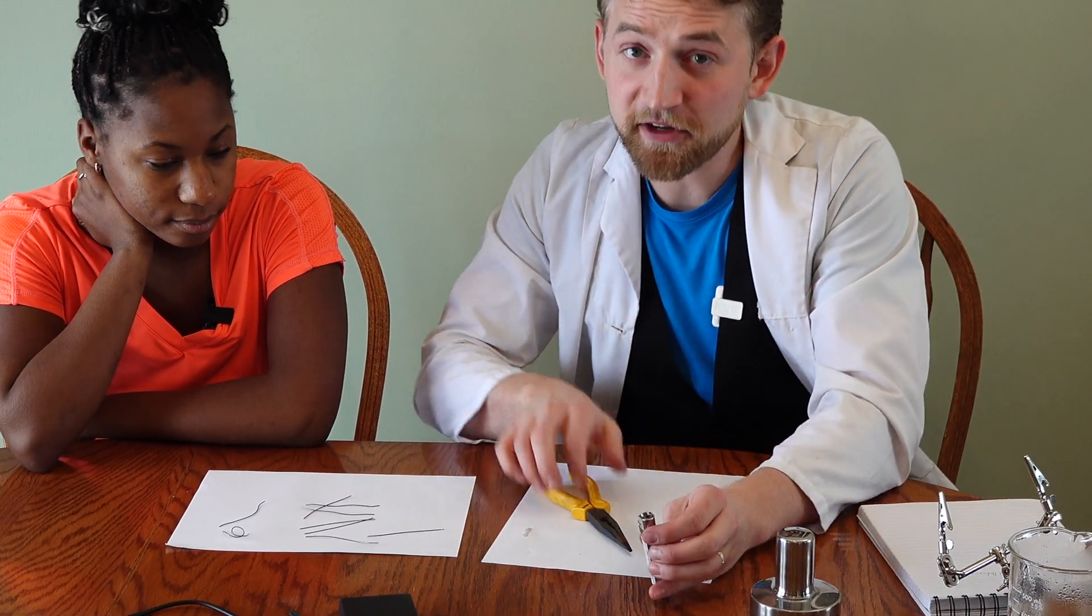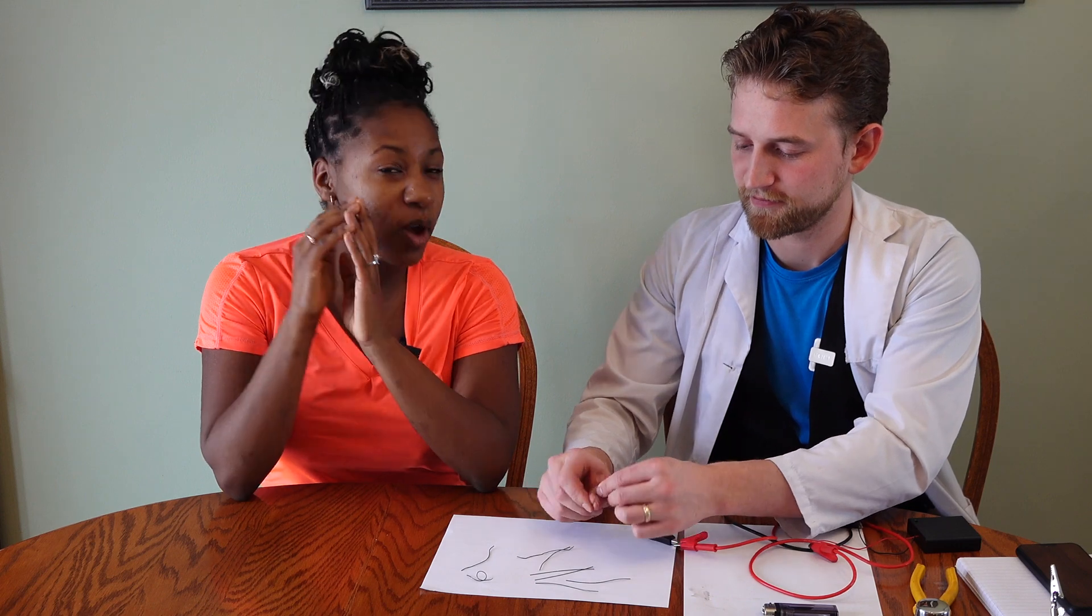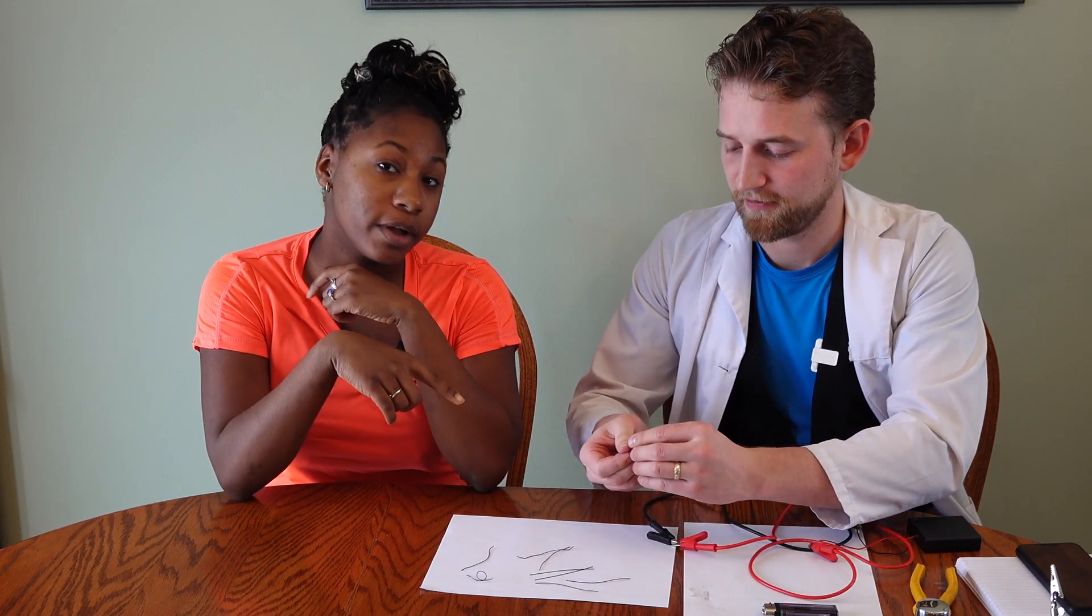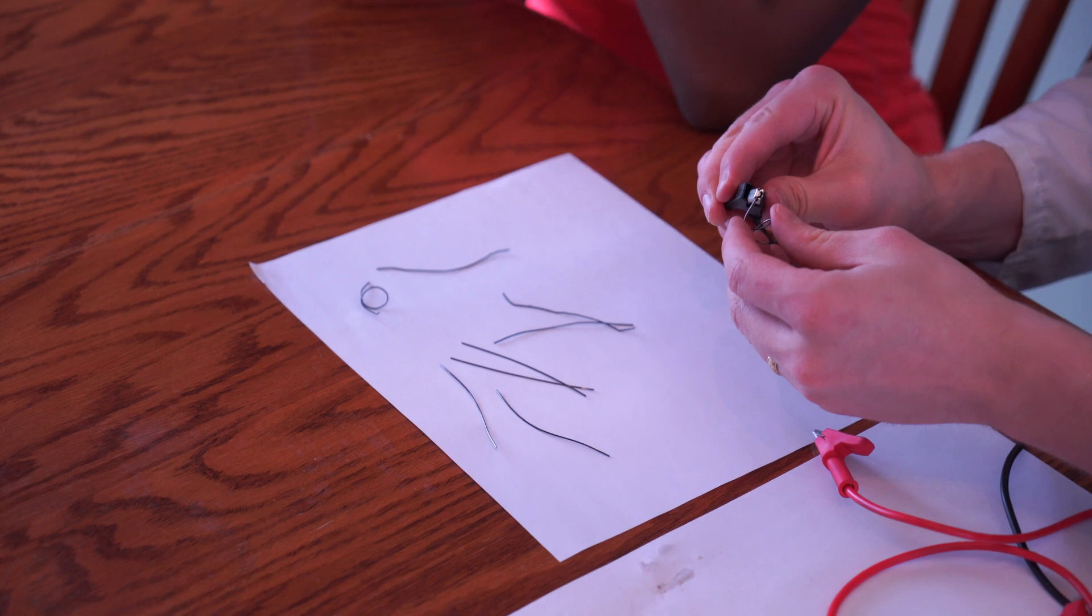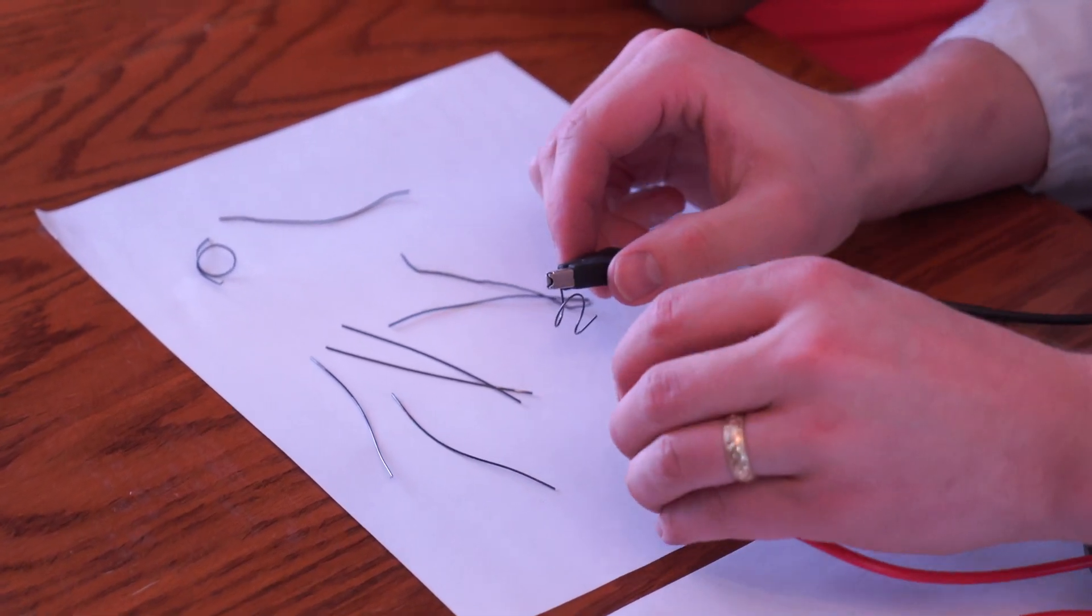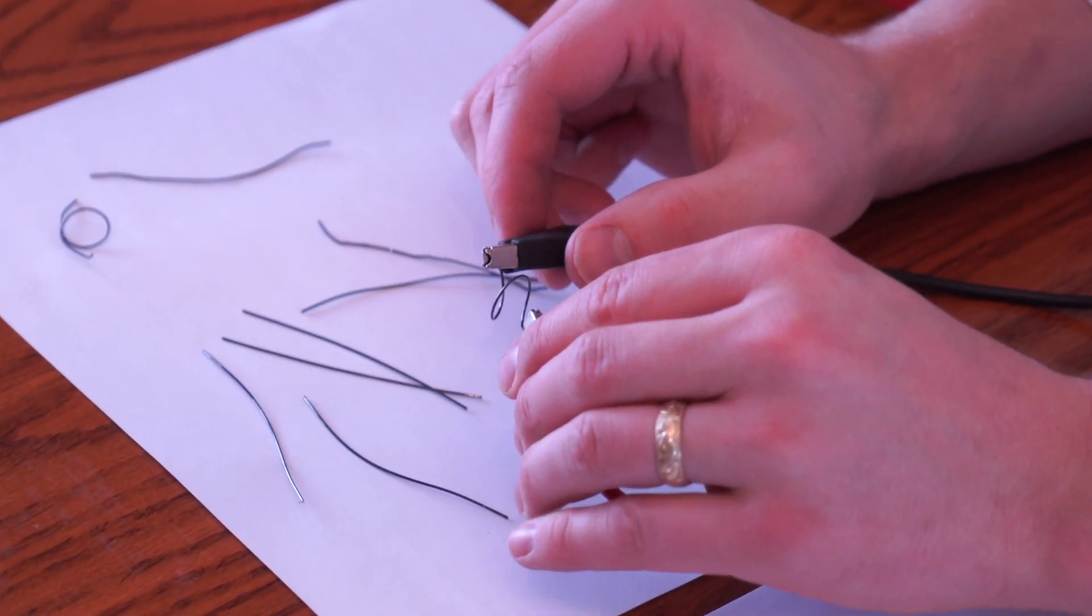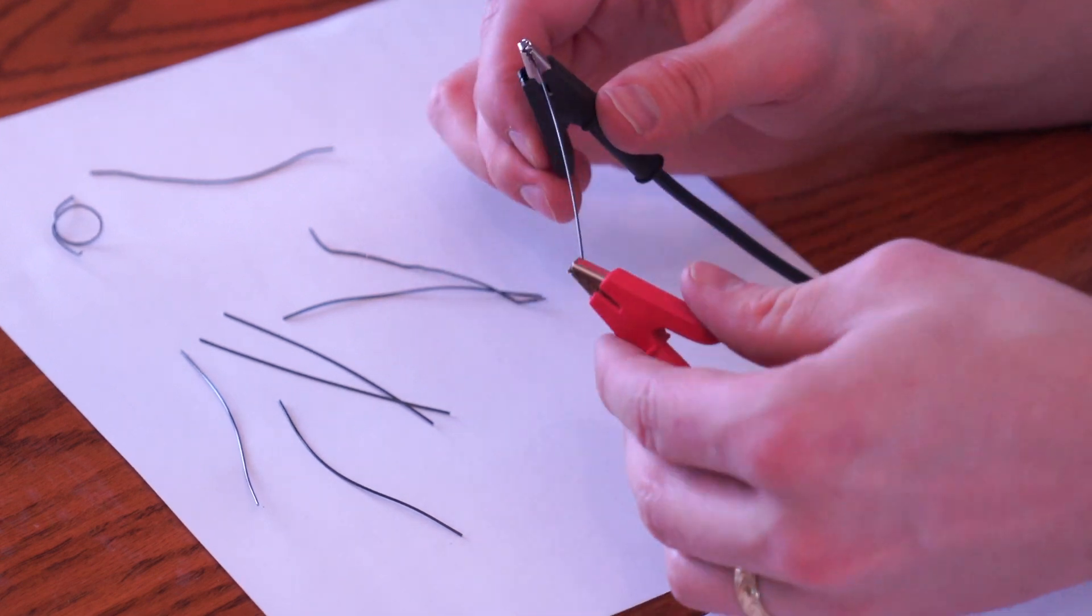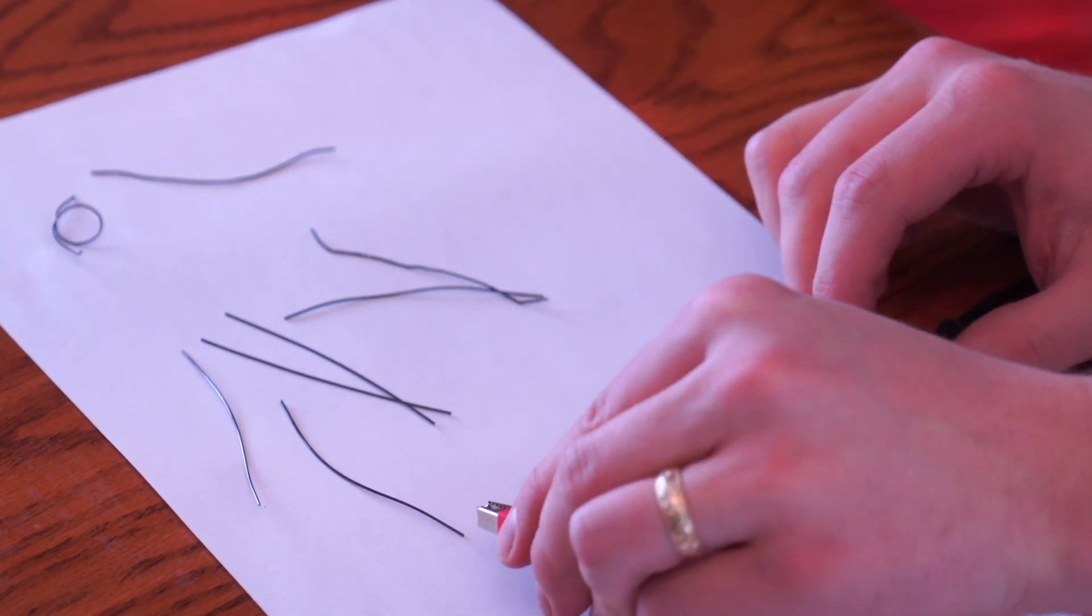50 degrees Celsius is the point at which it wants to return to its austenite state. This works with any type of heat. So when you run an electrical current through it, it heats up and remembers its shape. So let's just, just like that. That is cool.